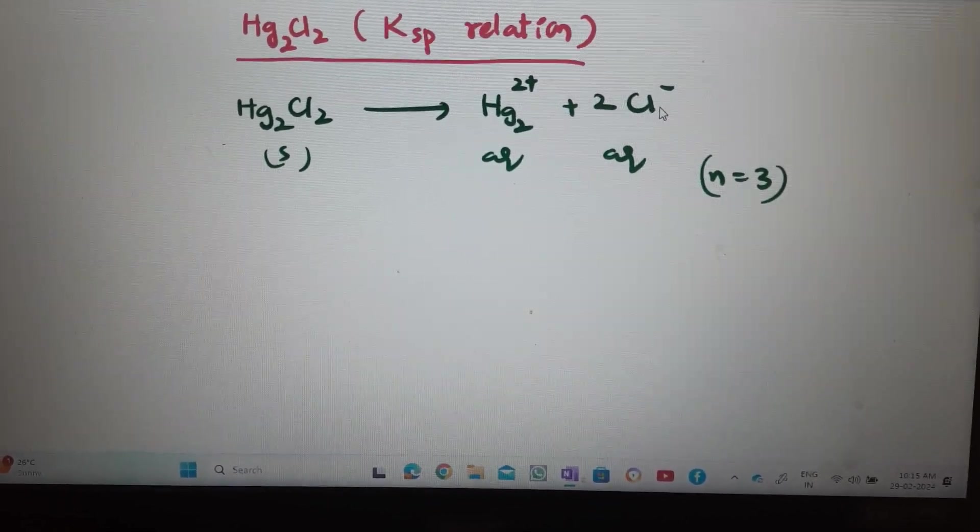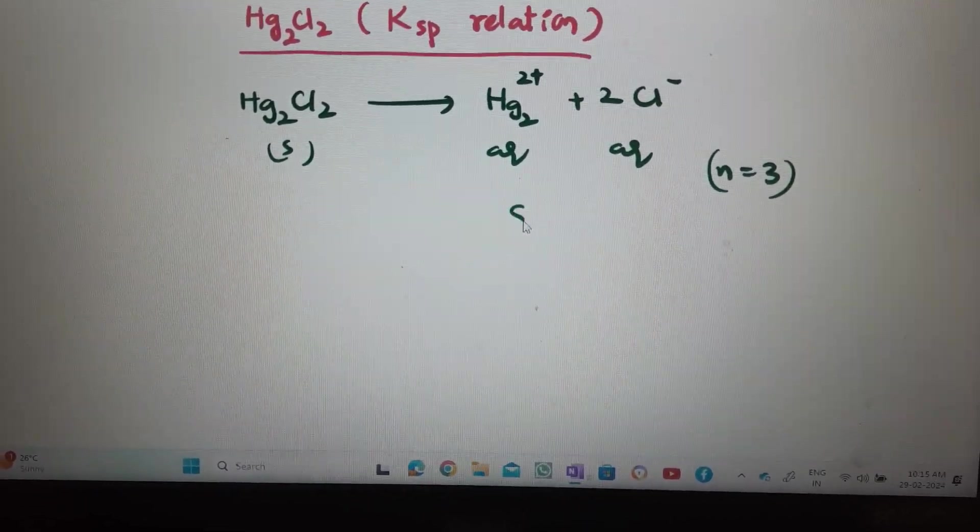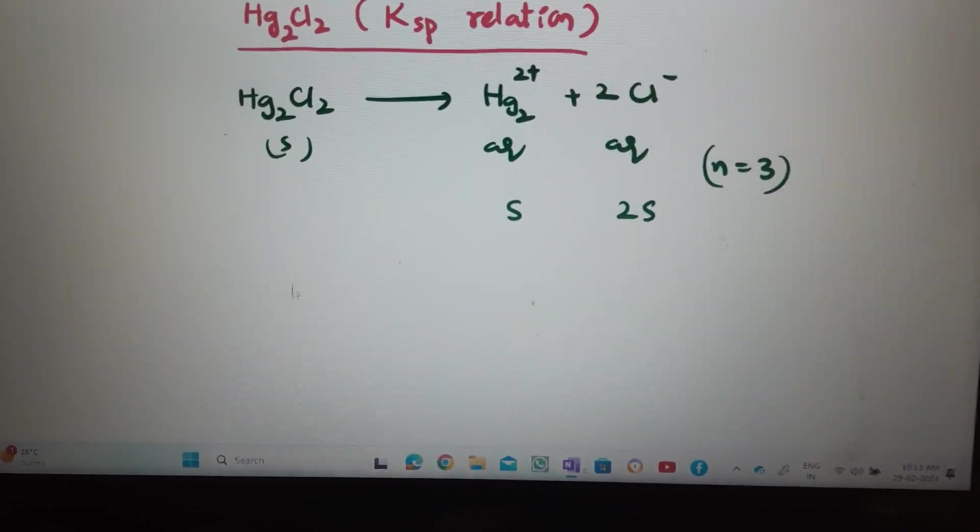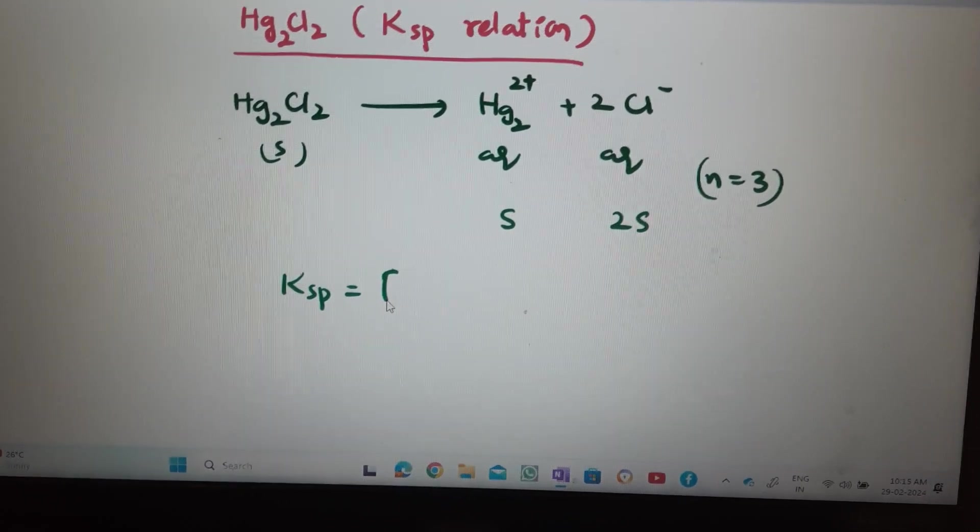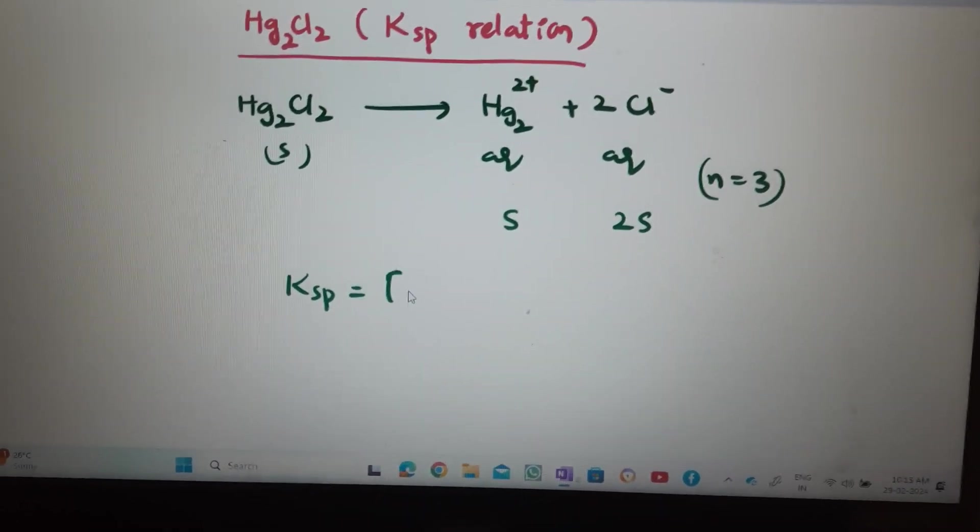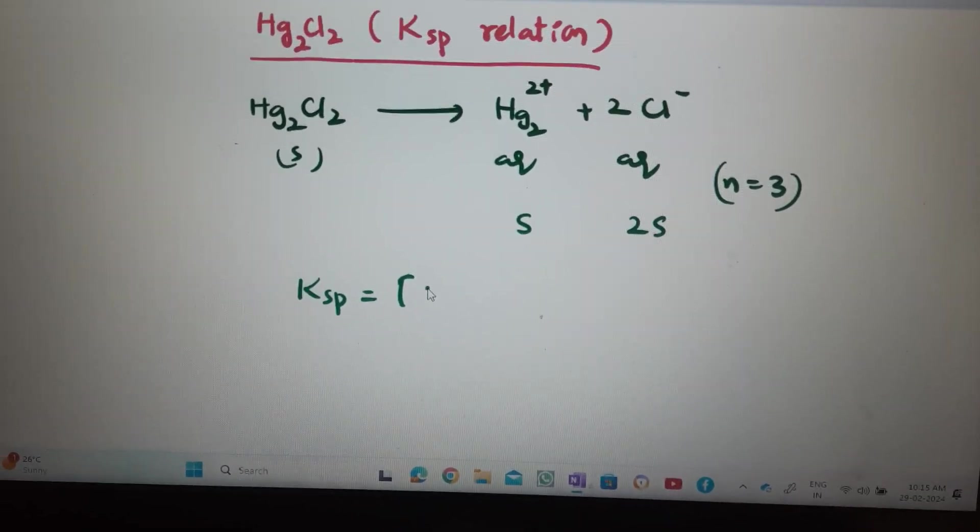Hg2²⁺, plus 2Cl⁻. If it is solubility S, this will be 2S. So, Ksp relation: Hg2²⁺ concentration into Cl⁻ concentration power 2.